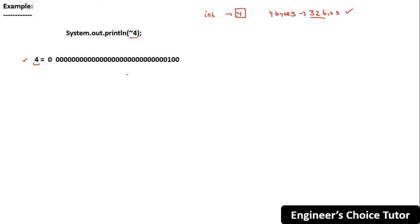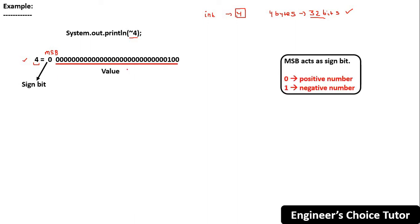This is the 32-bit internal representation of this int, how it is stored internally in the memory. The MSB bit, the most significant bit, is called the sign bit. The rest of the bits are the value. MSB acts as the sign bit. 0 means positive number and 1 means negative number.